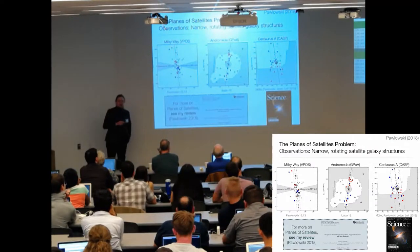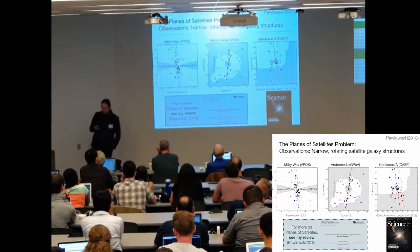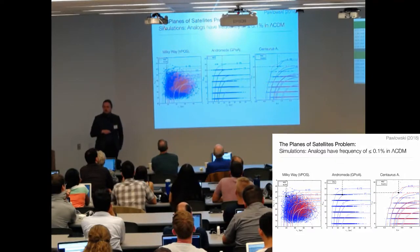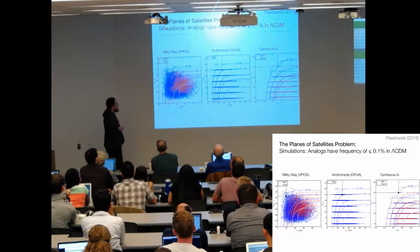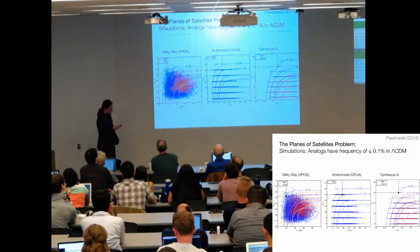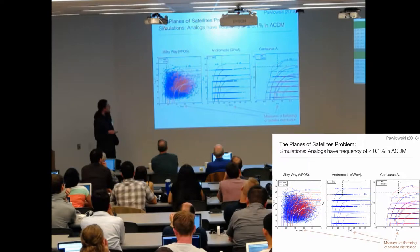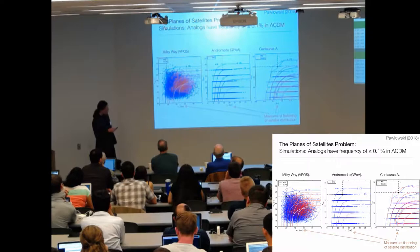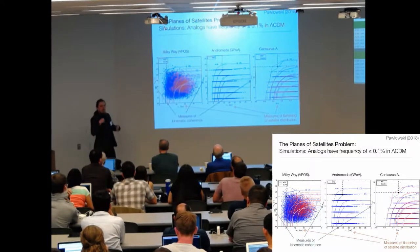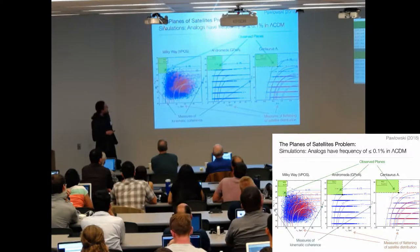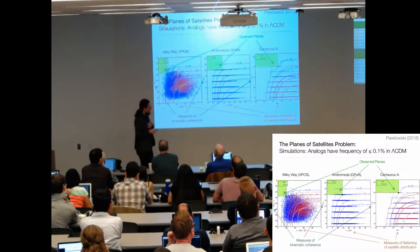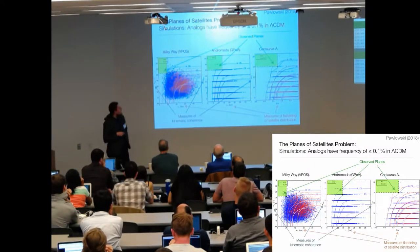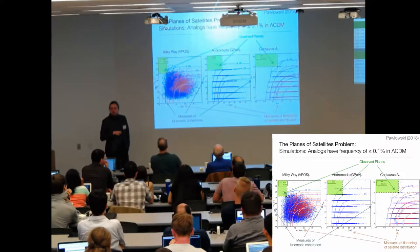This is basically just a plug - if you're interested in more, have a look at my review article earlier this year. To motivate that this is a real issue for lambda CDM, you don't find systems as extreme as in those three cases frequently in the simulations. On the x-axis we have a measure of the flattening of satellite planes, on the vertical axis a measure for the kinematic coherence. This is very rare, about one in a thousand for each case.